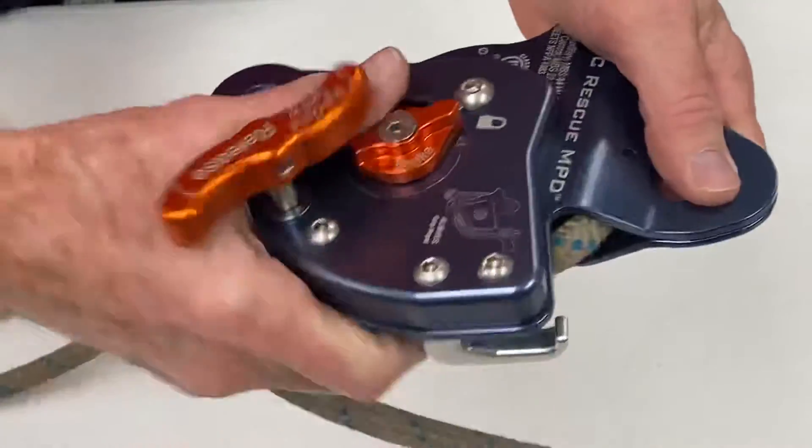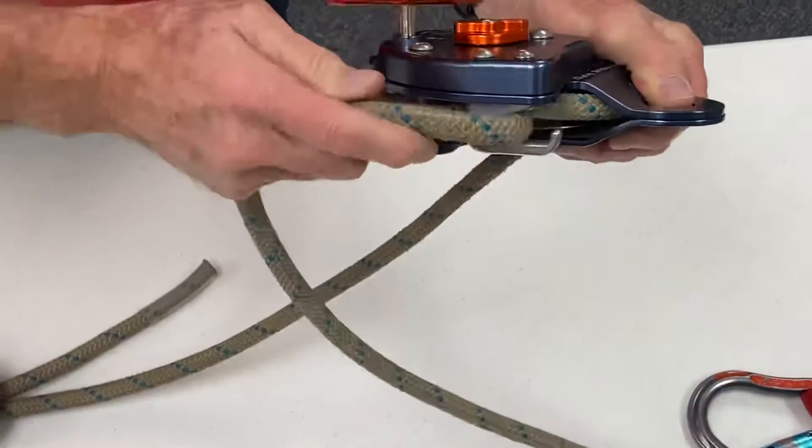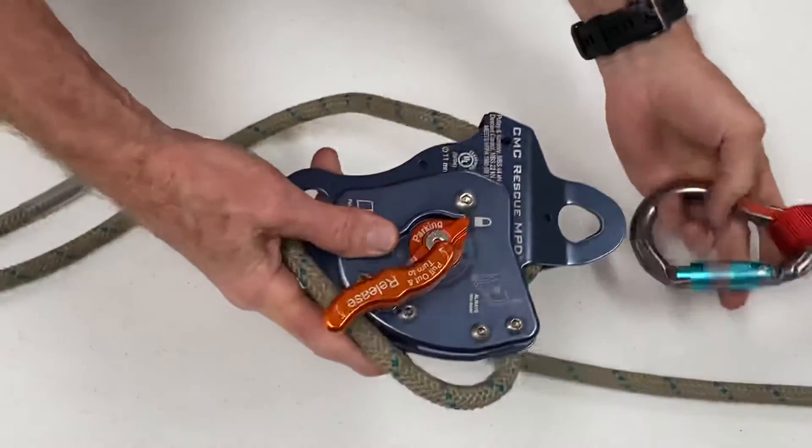And then we want to take this belay side. We want to come up and around the friction post and we can connect that to our anchor.